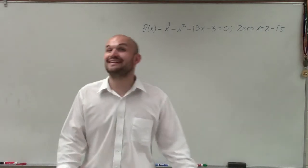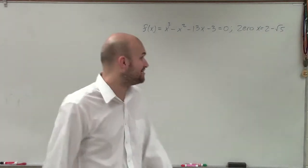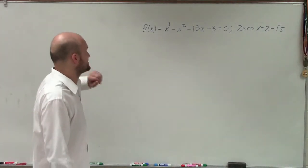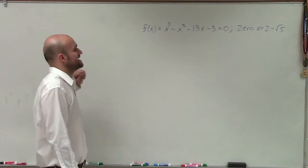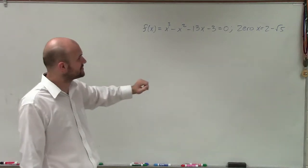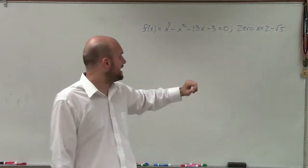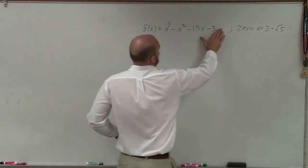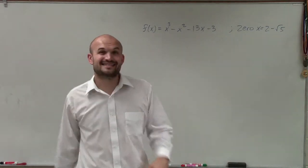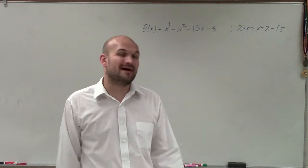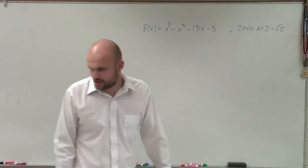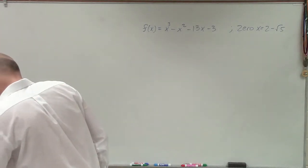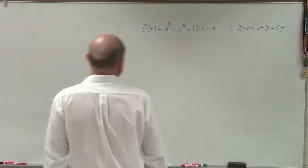All right, so now we're getting into some fun problems. What I have here is the polynomial f(x) = x³ - x² - 13x - 3, with a zero of x = 2 - √5.